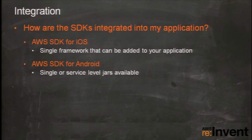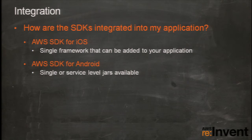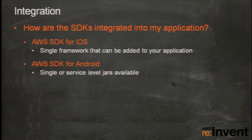For integrating the mobile SDKs, we try to make it as simple as possible. For iOS, we build a single framework that you add to your Xcode project, giving you access to all the services the SDK supports. For Android, we offer a single JAR you can integrate into your Android project, again giving you access to all services. Our goal is to keep this as easy and non-intrusive as possible.